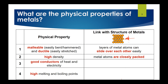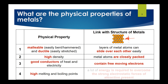Metals are good conductors of heat and electricity because the metallic structure contains many free-moving electrons, which can carry electrical current and transfer heat from one end of the structure to the other. Metals also have high melting and boiling points because a large amount of energy is required to overcome the strong electrostatic forces of attraction present within the metallic structure.